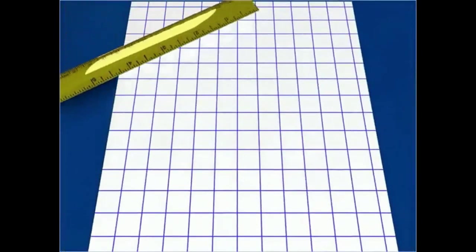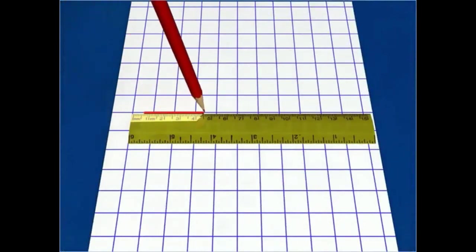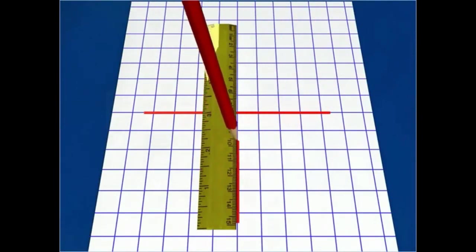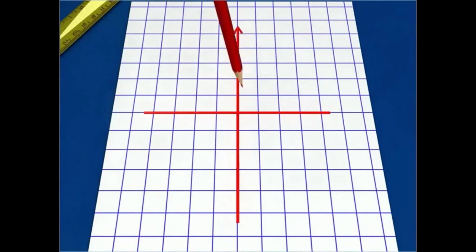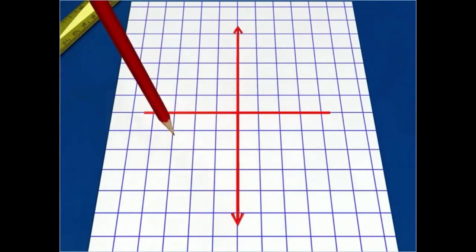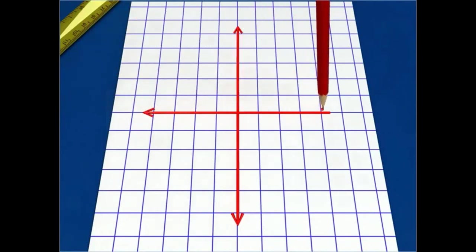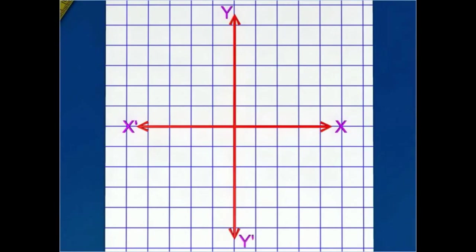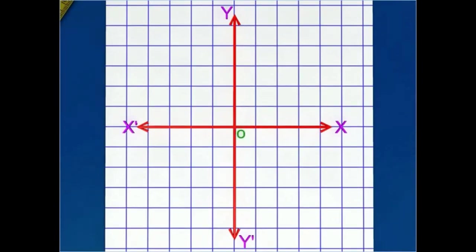To show the graph of the equation, draw two perpendicular lines. The horizontal line represents the x-axis, and the vertical line represents the y-axis. The point of intersection of the x and y-axis represents the origin. Mark the positive and negative values on both axes using a suitable scale.